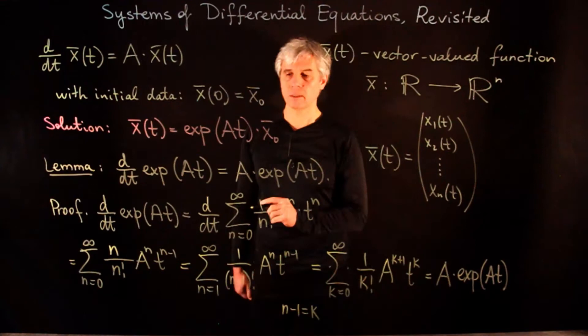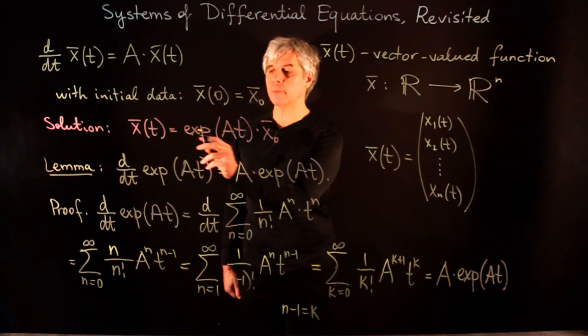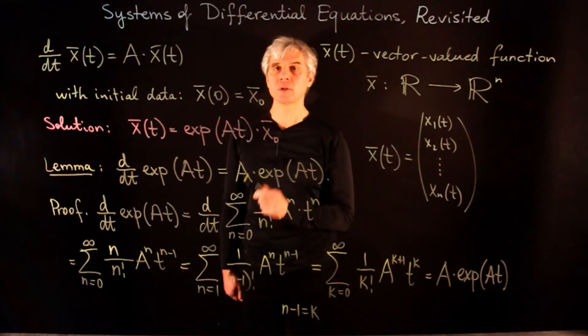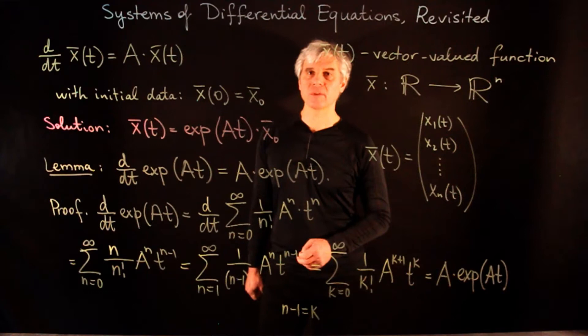In an earlier lecture we saw that if matrix A is diagonalizable, then we can compute this exponential using matrix diagonalization. But what will happen if A is not diagonalizable and has Jordan blocks instead? To answer this question, we first prove an auxiliary lemma about the exponential of a sum.